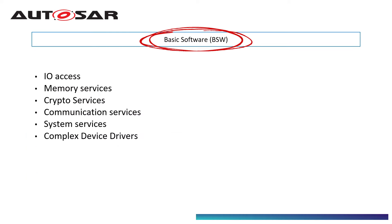The BSW layer provides the following services: Input/Output — which provides access to sensors, actuators, and various peripherals; Memory — which provides access to internal and external memory; Crypto — which provides cryptographic primitives; Communication — which provides various communication protocols for onboard and off-board communication; and System — which provides ECU-specific services and library functions.